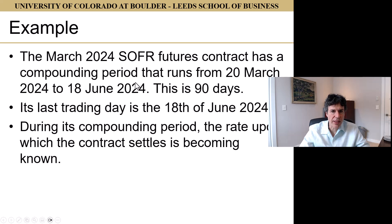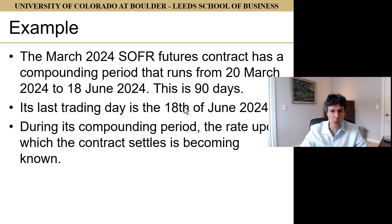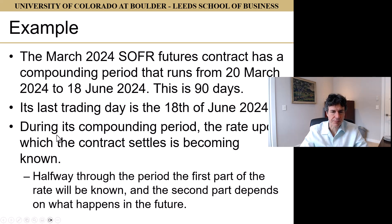The March 2024 SOFR futures contract has a compounding period that runs from March 20th to June 18th, 2024 — 90 days. The compounding period is almost always 90 days, but it could be a week longer or shorter depending on the exact dates. The last trading date for this contract is June 18th, 2024, the Tuesday before the third Wednesday of June. During the compounding period, the rate upon which the contract settles is becoming known.